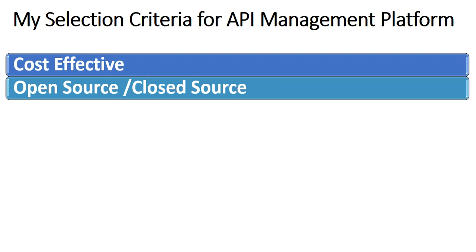With a closed source platform, the source code is not exposed to you, but you will get full support and complete dominance from a specific API management vendor who takes responsibility for providing fixes and support. In that case, you will have additional cost because you will have to pay for licensing as well as the recurring support model that you choose.